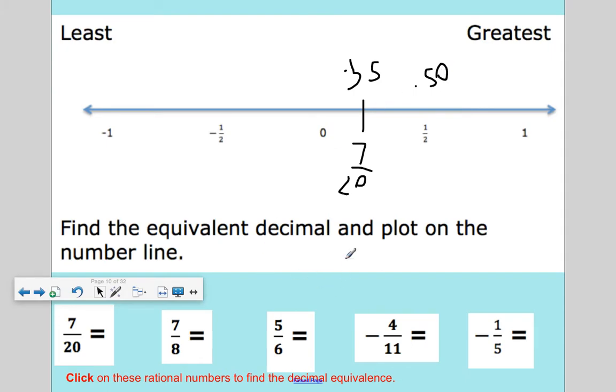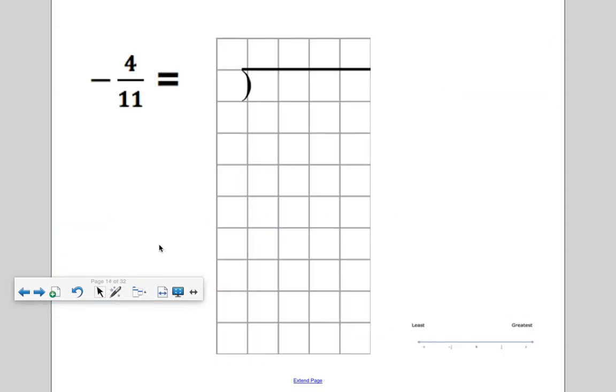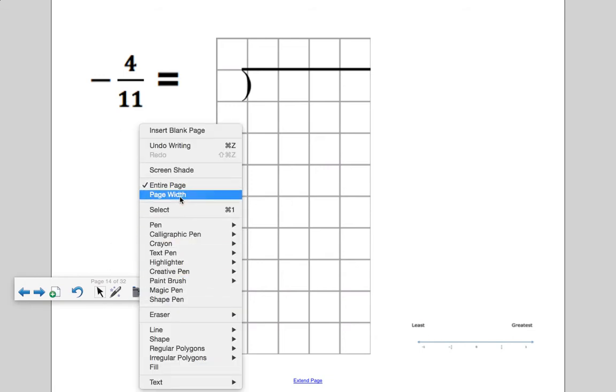So let's look at another example. We have, let's look at this example. Negative 4/11. Can 11 go into a hundredths place? It cannot. So we will have to divide it.